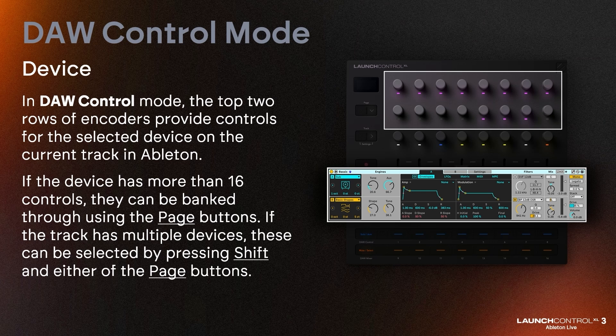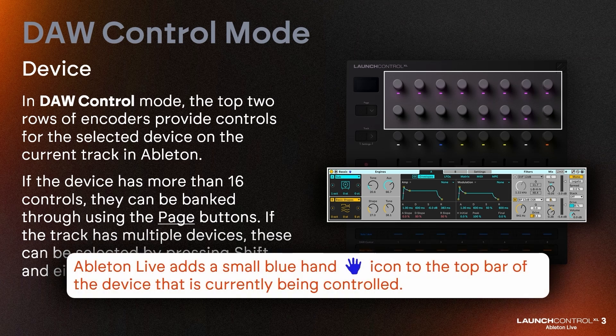If the track has multiple devices, these can be selected by pressing shift and either of the page buttons. Ableton Live adds a small blue hand icon to the top part of the device that is currently being controlled.